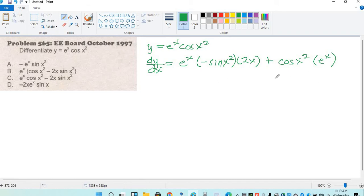So, therefore, labas natin yung e raised to x. So, magiging cos x squared minus 2x, rearranging lang, 2x sin x. So, ang answer is letter B.